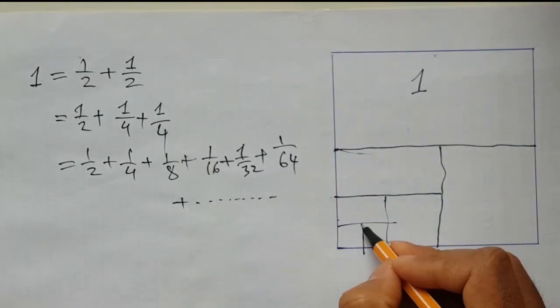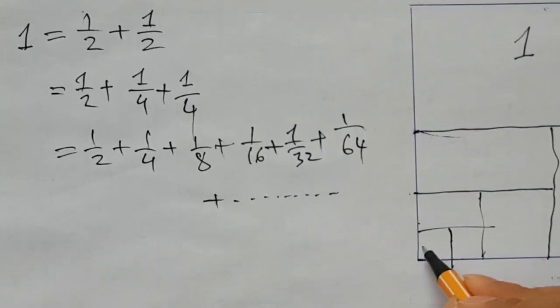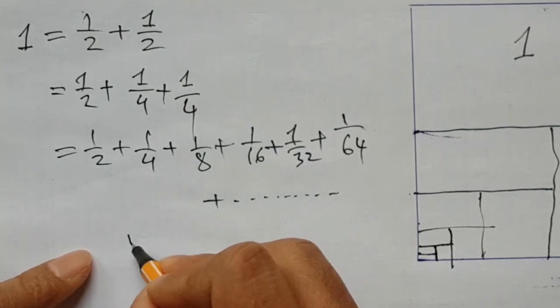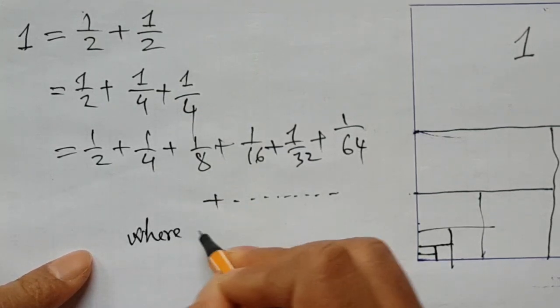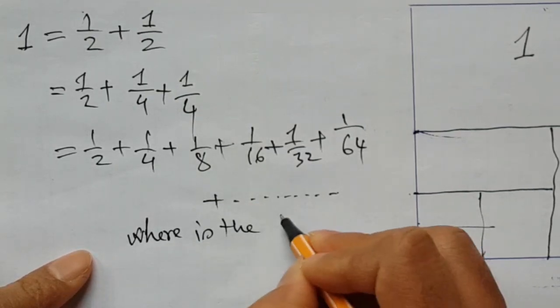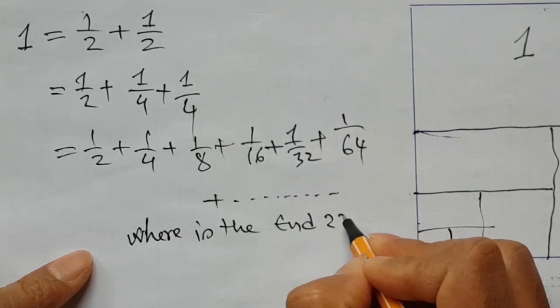The question is, how long can I continue this series? Because every time I am cutting half of the next surface, I am reducing the surface volume, but is there any endpoint? Where is the ending point of this series? Can I finish this expansion? This is a really interesting question.